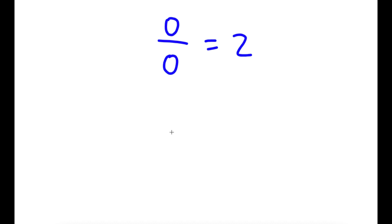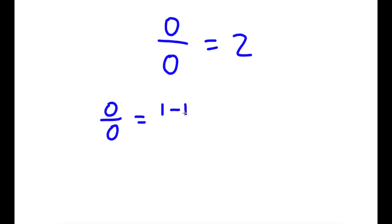I'm going to be proving that 0 divided by 0 is equal to 2. To do this, I'm going to first start with 0 divided by 0. This is the same thing as 1 minus 1 over 1 minus 1, because 1 minus 1 is 0 — so 0 over 0 equals 1 minus 1 over 1 minus 1.